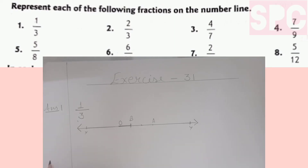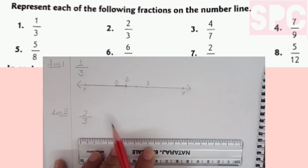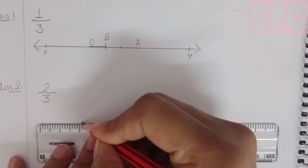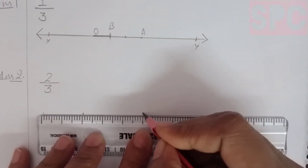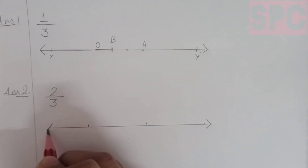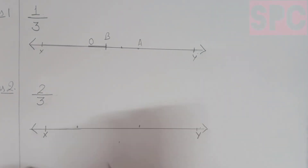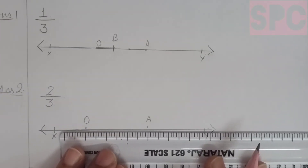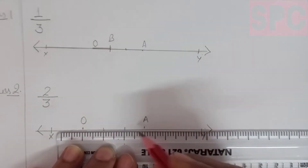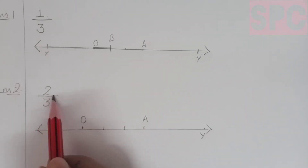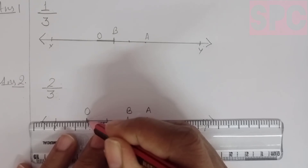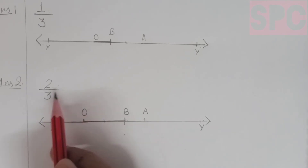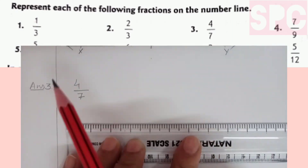Let's move on to question number 2 - we have to represent 2 by 3. We will draw a number line XY and mark two points O and A which will be 3 units apart, since the denominator is 3. We will divide OA into 3 equal parts - first part, second part, and third part, which are 1 centimetre apart. We have to consider 2 parts because our numerator is 2. At the end of the second part, this point will be marked as B. Therefore, on this number line, the line segment OB will represent the fraction 2 by 3.